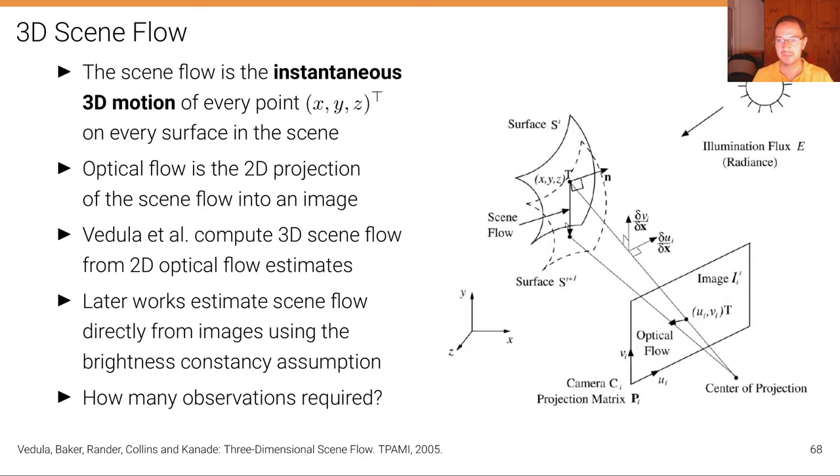Where we have a surface at time t and a surface at time t plus 1. And this point in 3D space is moving from here to there physically. And so its optical flow is moving from here. It's actually the motion field. It's moving from here to there.